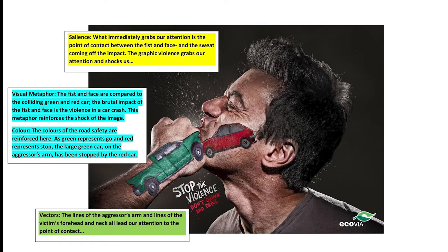And all the vectors — the straight lines of the arm of the aggressor and the forehead and neck of the victim — all lead to the point of collision. No wonder the point of impact is in the middle centre third of the image. It is the centre of the image where all the action of the image is happening.